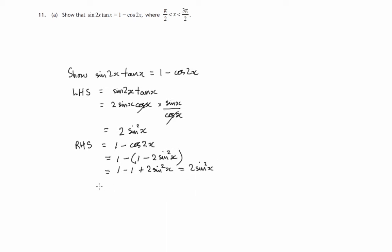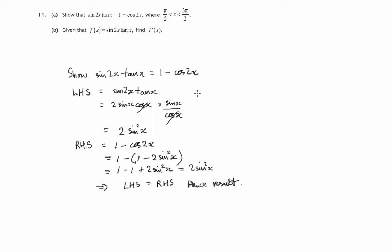Since the left hand side equals 2 sin squared x and the right hand side simplifies to the same thing, we have shown that the left hand side is equal to the right hand side. Hence the result. That's Part A — let's move on to Part B.